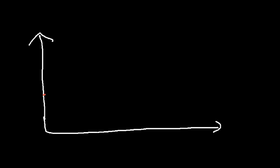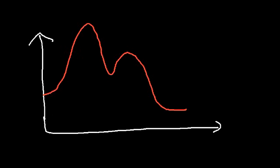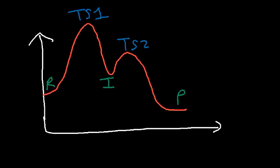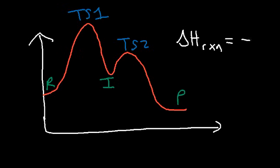What about a two-step reaction? If you have a two-step reaction there are going to be two transition states — TS1 and TS2, also known as activated complexes. There are also reactants, products, and an intermediate which is in the middle. Overall, since the products have less energy than the reactants, the overall enthalpy is negative — it's an exothermic reaction.